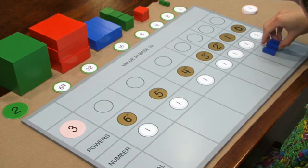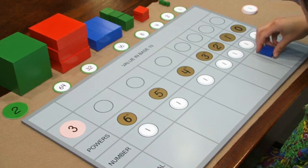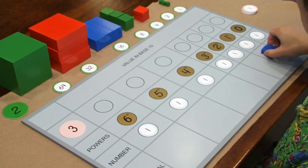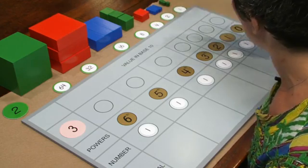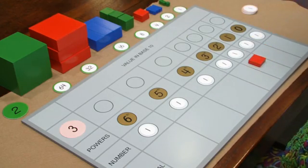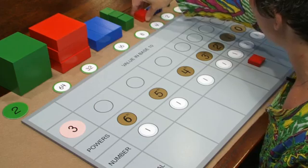Now I can count out again, 1, 2, 3. I can exchange my 3 blue rectangular prisms for the next highest value, the flat red rectangular prism.